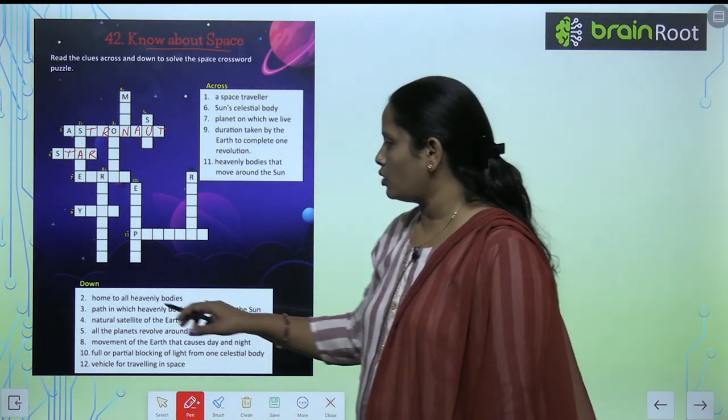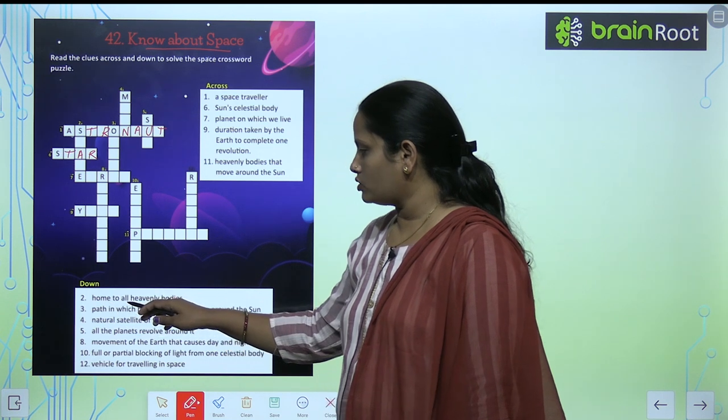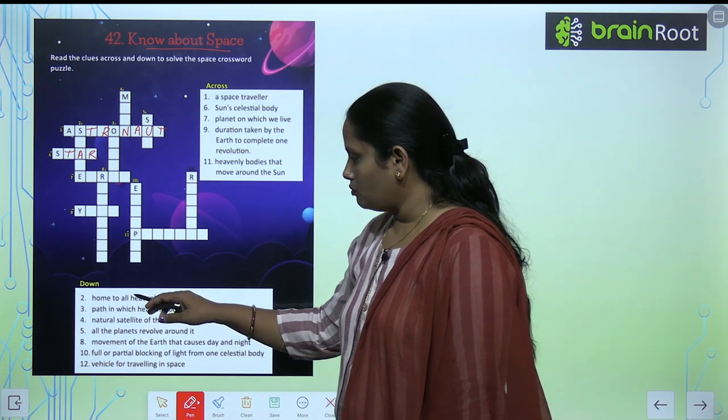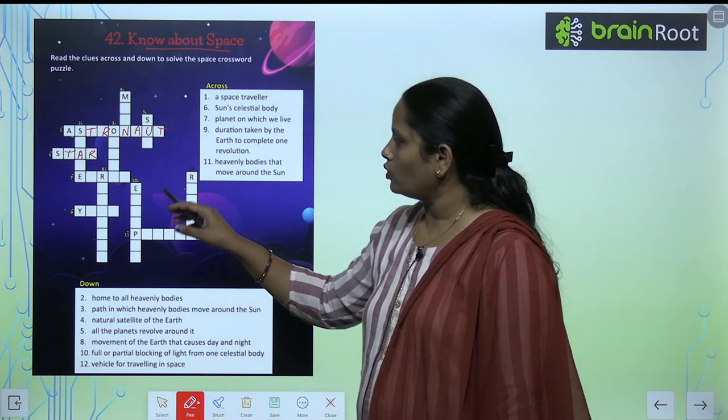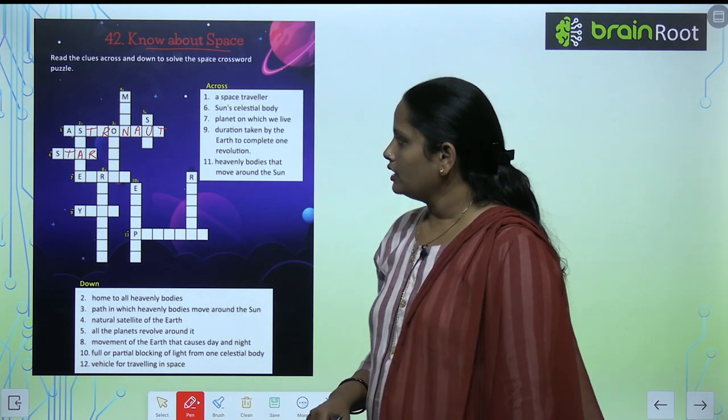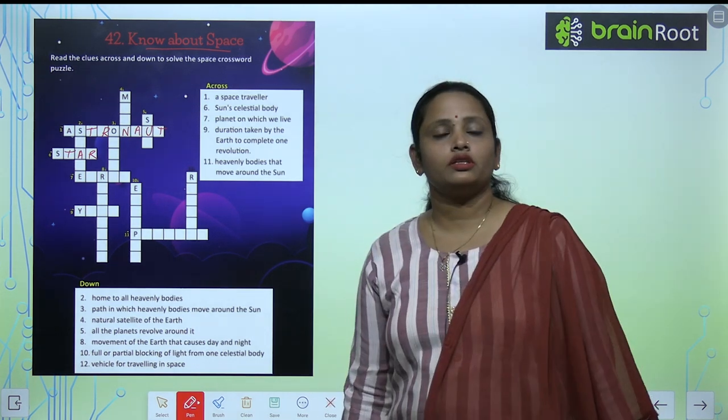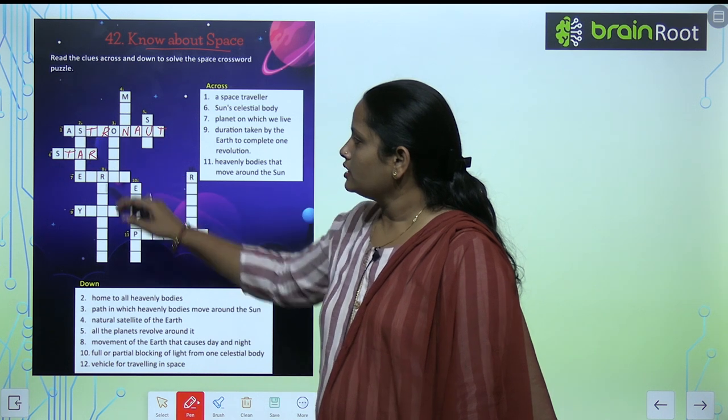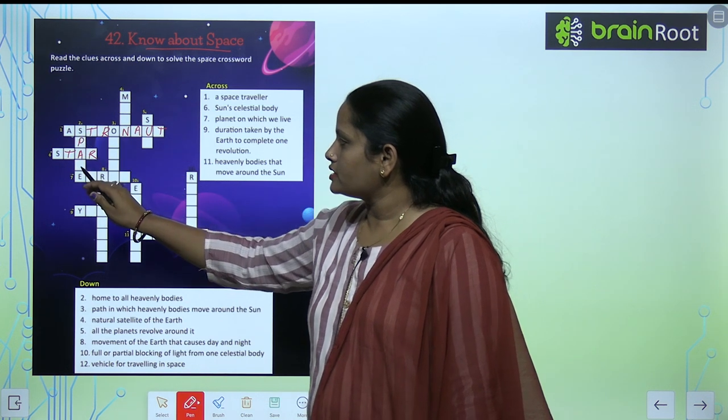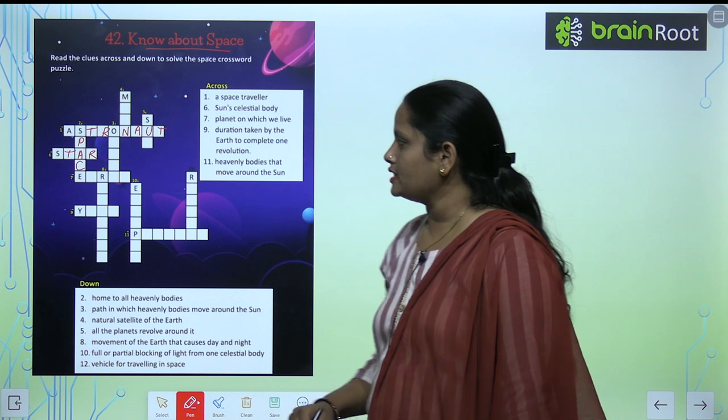Next, let's move to down. Home to all heavenly bodies. Toh jitne bhi heavenly bodies hain, unke home ko hum kya kette hai? And so children, the home to all the heavenly bodies, here is S, and it will be space. S-P-A-C-E.